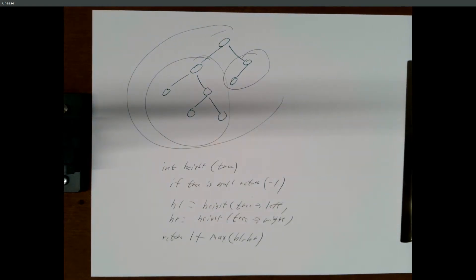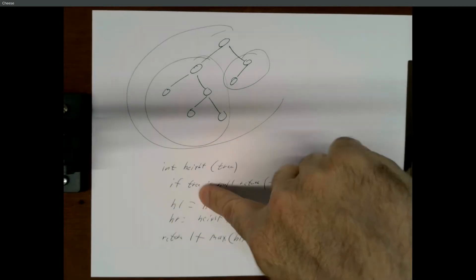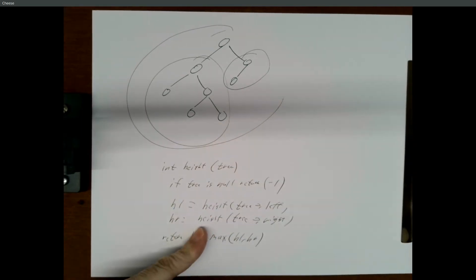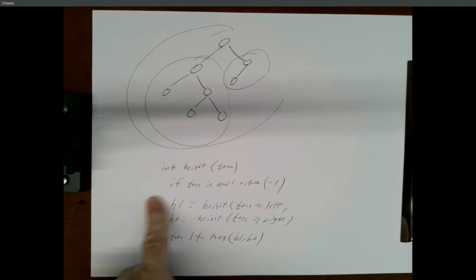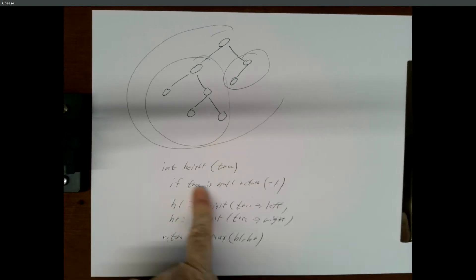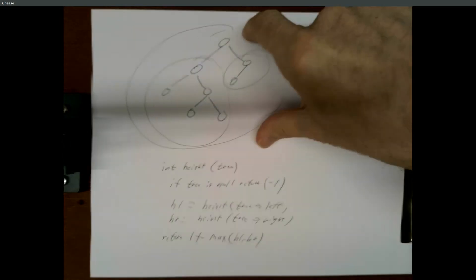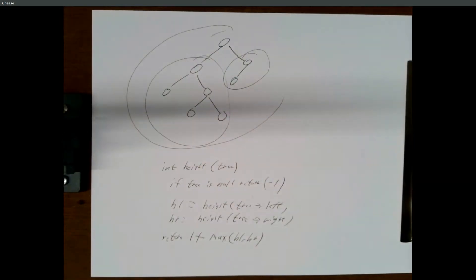It actually goes down and visits every node in the process. You can sort of tell that from algorithms like this in general, because each time you come in you're going to make two recursive calls. The number of calls you're going to make is two times, however many times you're going to call this, which is basically the height.